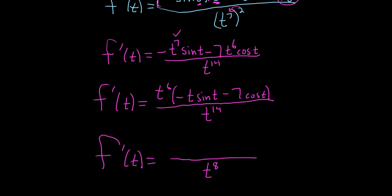And we're left with the sine and the t up here, so negative t sine t minus 7 cosine t. And that is the derivative of the function.